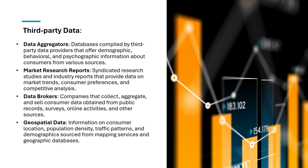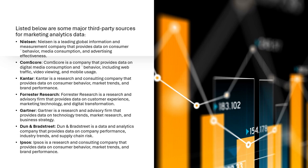Second party data sources include: partner website data shared through collaboration or data sharing agreements such as customer demographics or browsing behavior; co-branded surveys — joint surveys or research initiatives conducted with partner companies to understand shared audiences; and loyalty programs — information exchanged through loyalty programs or co-branded credit cards providing access to customer spending habits and preferences. Third party data sources include data aggregators that compile demographic, behavioral, and psychographic information from various sources; marketing research reports with industry trends and competitive analysis; data brokers that collect, aggregate, and sell customer data from public records, surveys, and online activities; and geospatial data providing information about consumer location, population density, and traffic patterns.